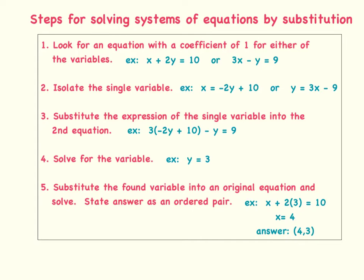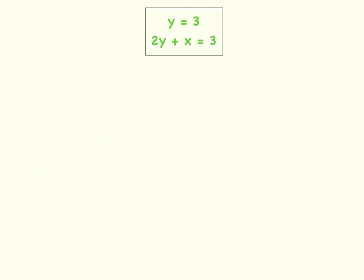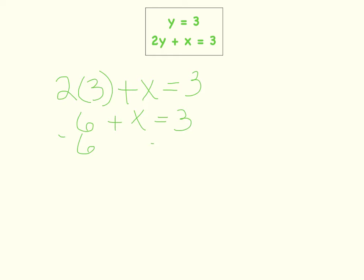Now let's do an example together. We have the equations y equals 3, and 2y plus x equals 3. In this example, y is already isolated, and we know that y equals 3, so we can just substitute 3 for the y in the second equation. So we say 2 times 3 plus x equals 3. 2 times 3 is 6, so 6 plus x equals 3. Now I just subtract 6 from both sides, and I have x equals negative 3.